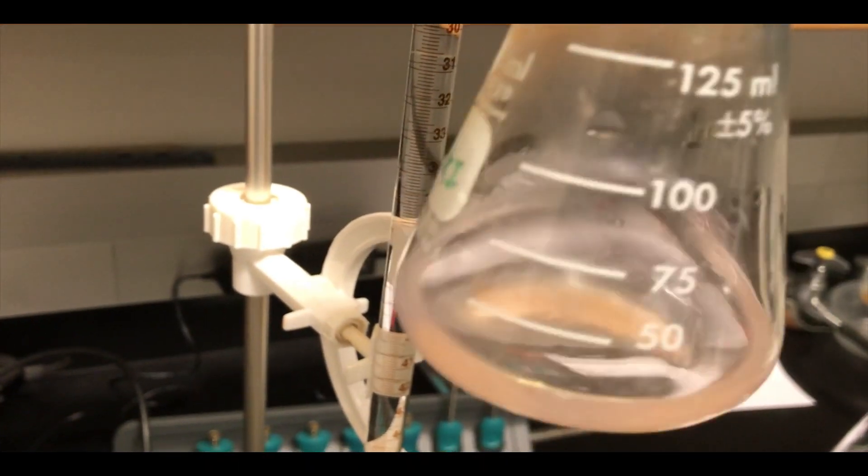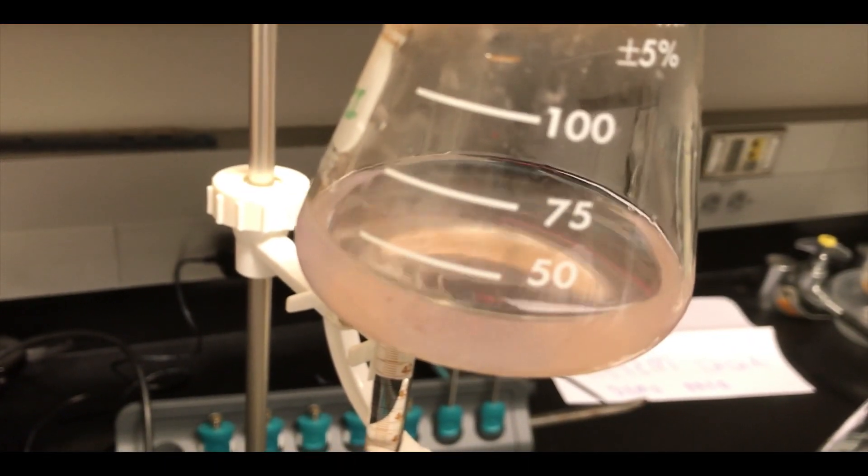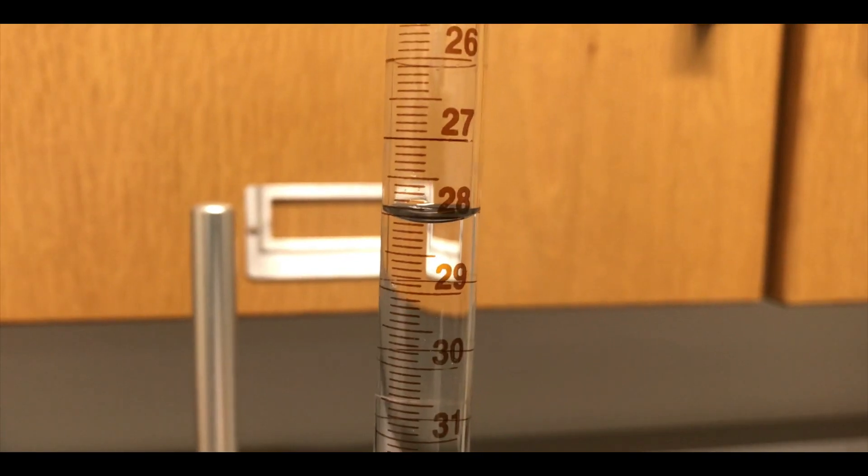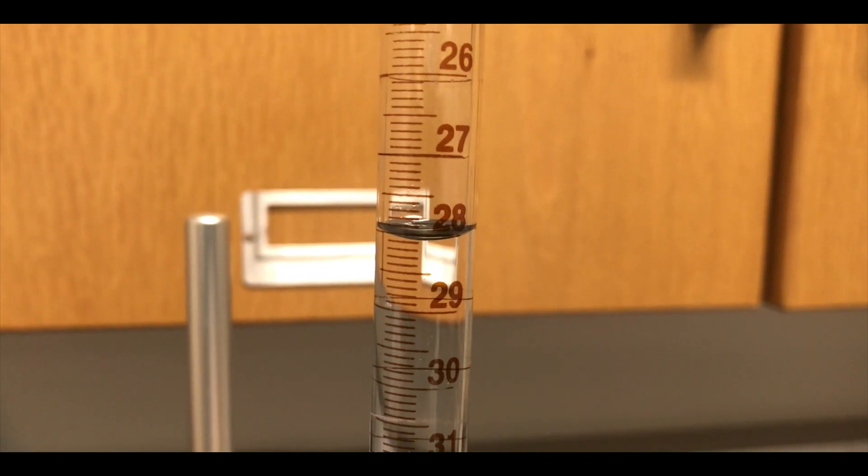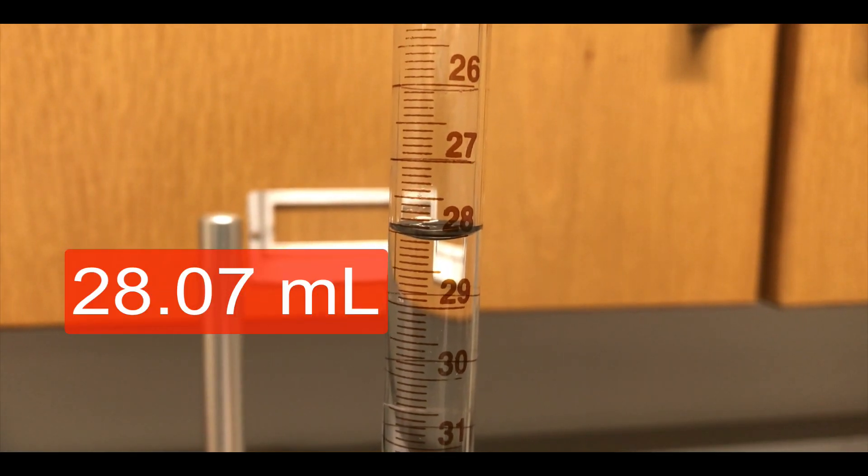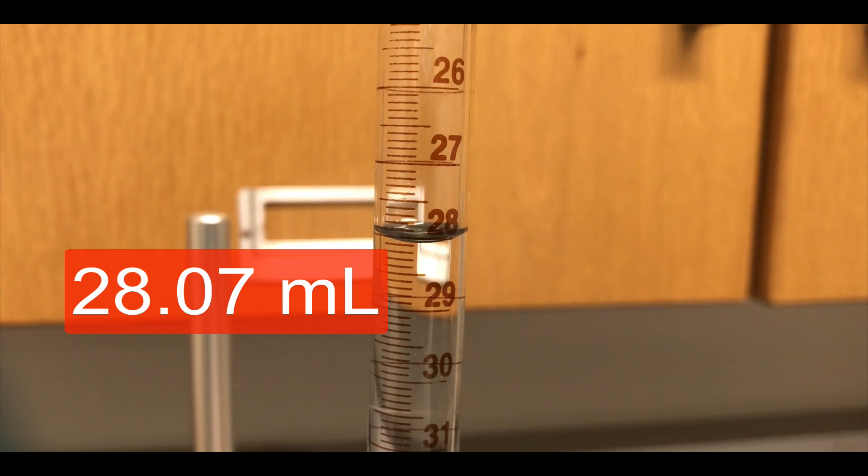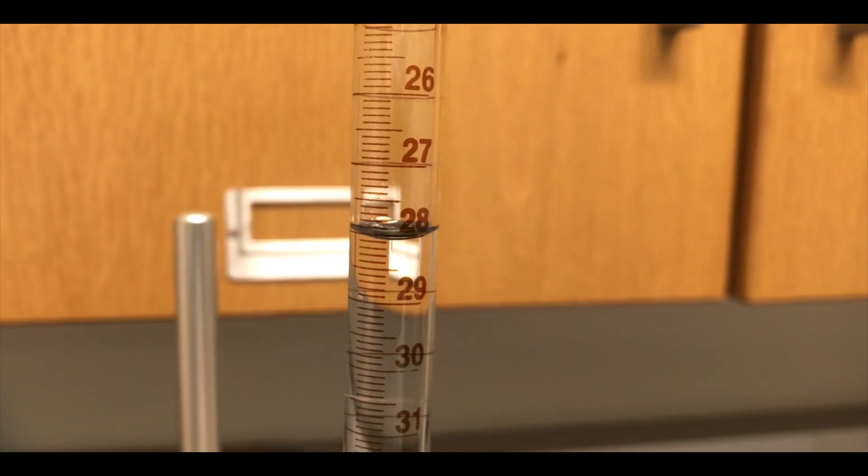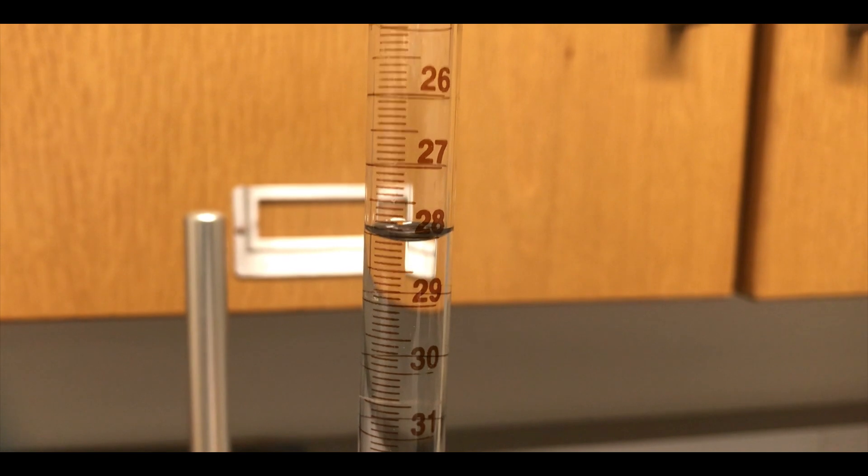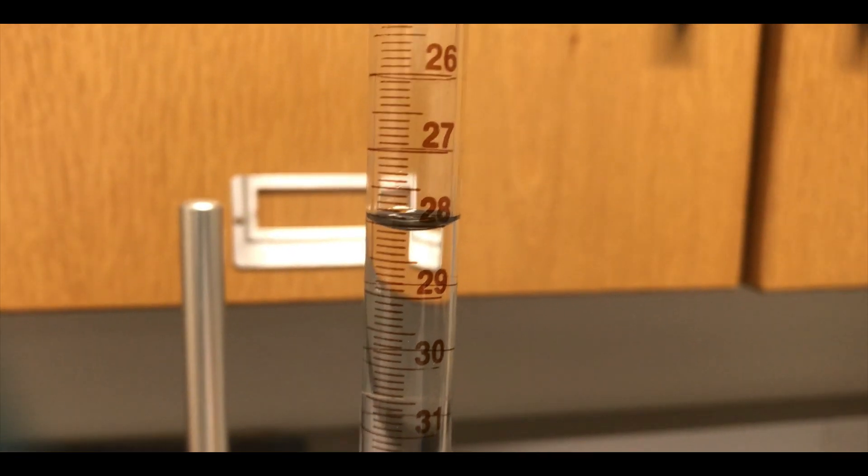And now we're going to take a reading of the final volume to get a sense of how much hydrochloric acid we added. So looking at the bottom of the meniscus there, this looks to be about 28.07 milliliters, I would say. So the difference between that and our initial volume reading tells us how much hydrochloric acid we added.